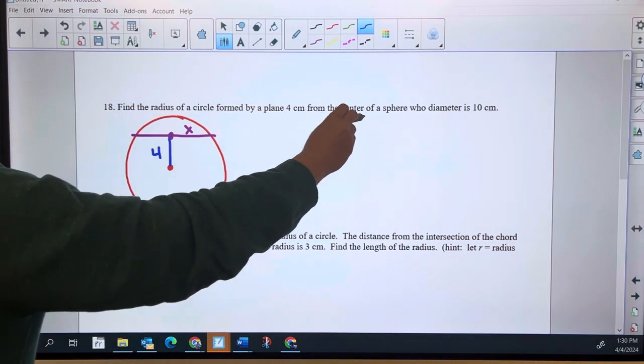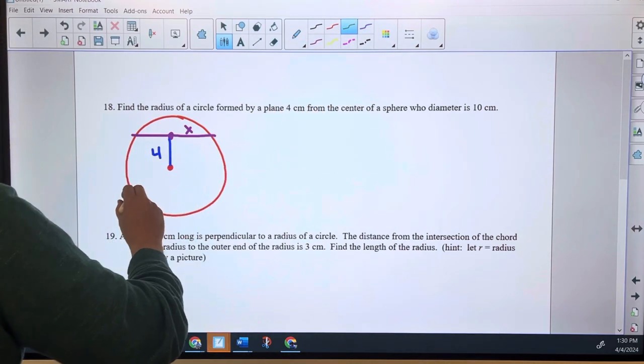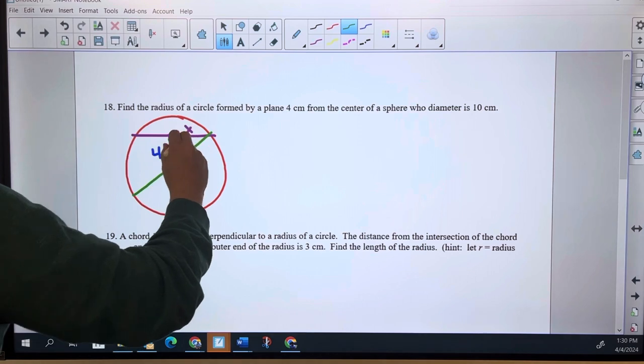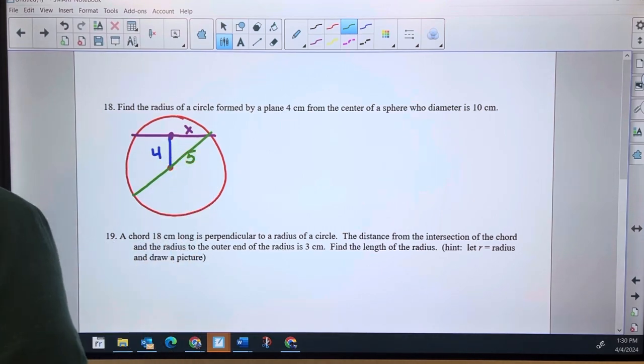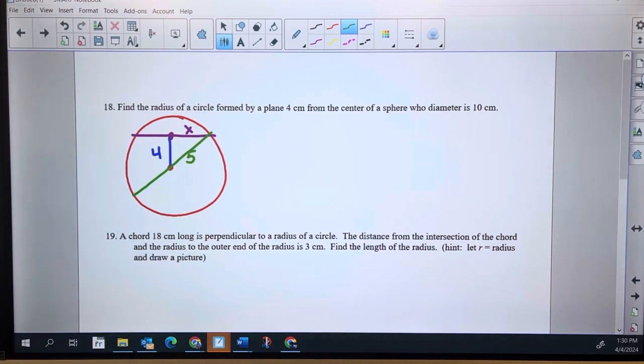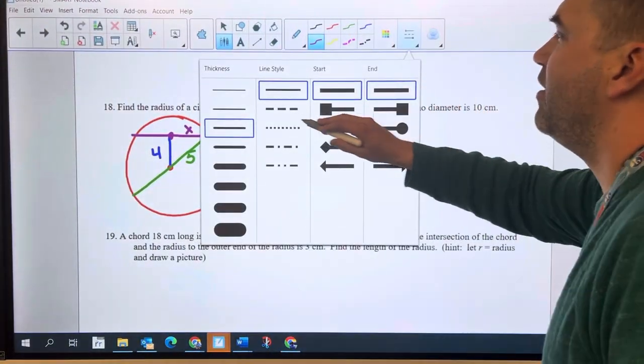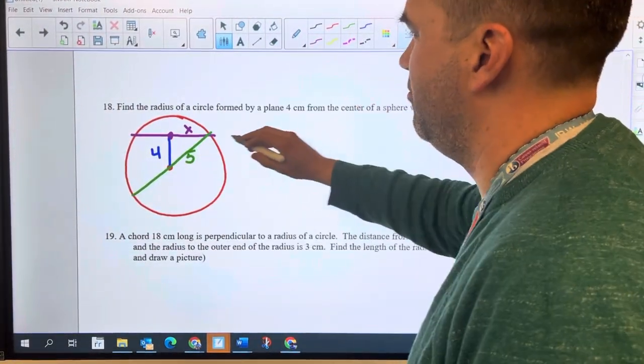The sphere has a diameter of 10, which means the radius of that sphere is five. So that sets me up with a nice little image. This is a three four five triangle, it's a Pythagorean triple, but we'll go ahead and use the Pythagorean theorem just to make sure everybody's comfortable here.